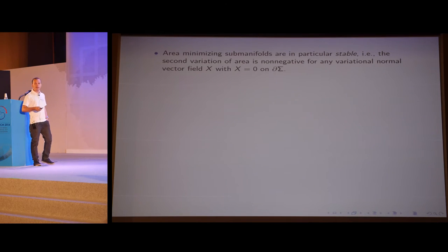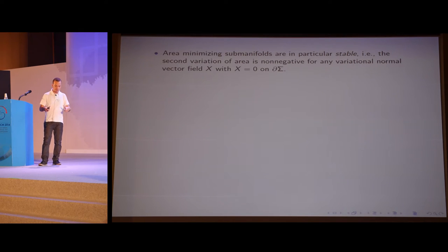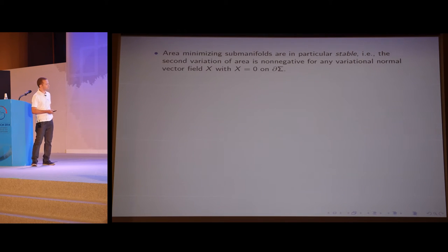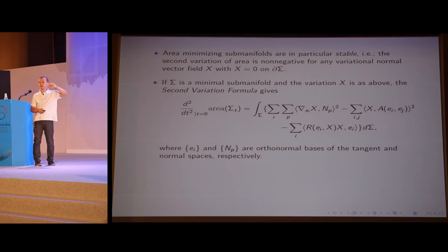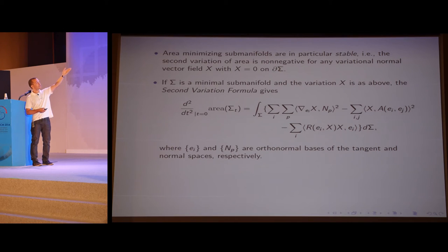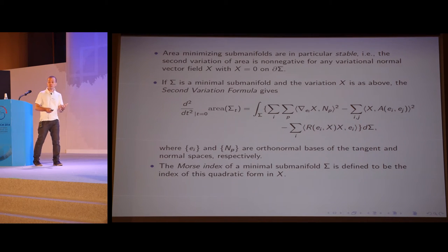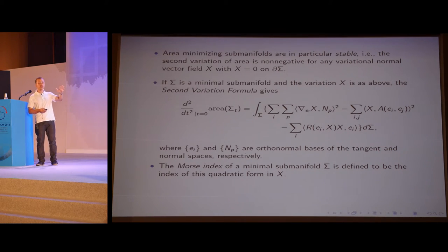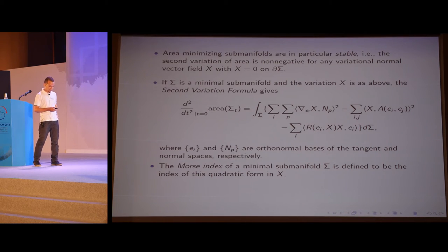Area-minimizing submanifolds are in particular stable, which means that the second variation of the area is non-negative for any variation that keeps the boundary fixed. One can compute the second variation of the area — it's given by a quadratic form in X. The formula is a bit complicated, but it simplifies a lot in codimension 1. One can define the Morse index, as in any variational theory: the Morse index is defined to be the index of this quadratic form — the maximum dimension of a subspace restricted to which the second variation is negative definite. It's a very important number in variational theory.